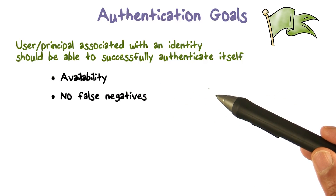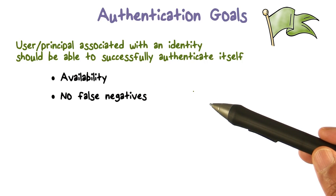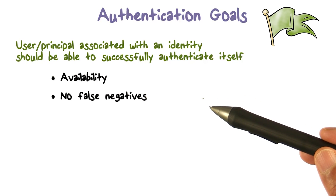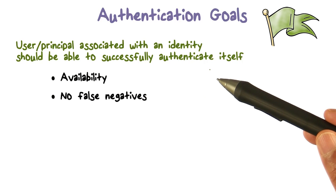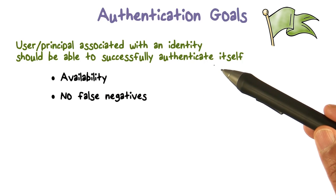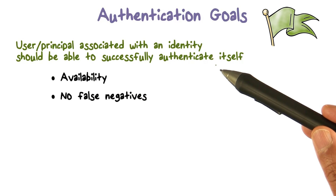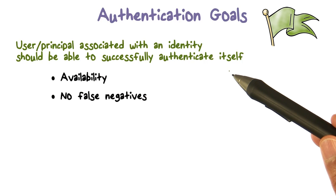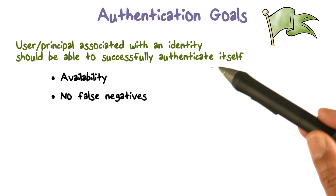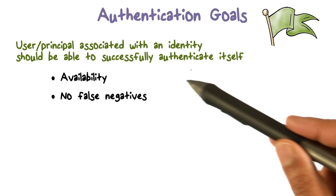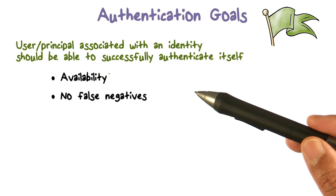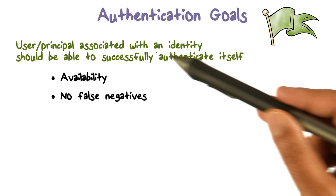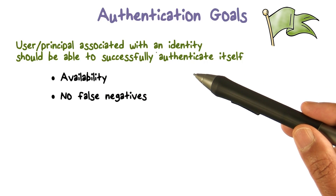Whatever authentication method we use, what do we desire from it? What should be its goal? First of all, when a legitimate user tries to authenticate herself, the system can demand some evidence. But when the right evidence is provided, the system should allow the login to complete successfully. That is called availability.